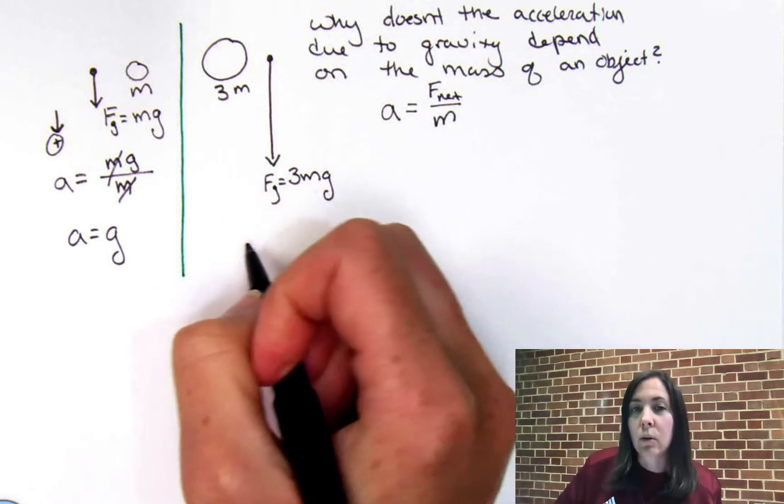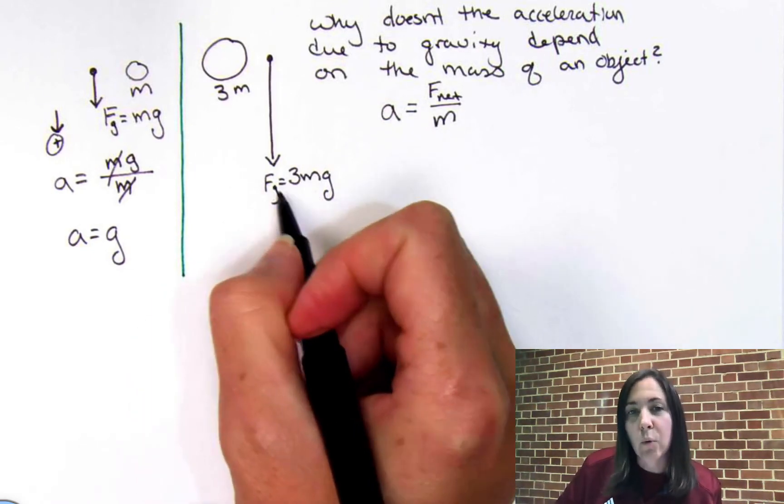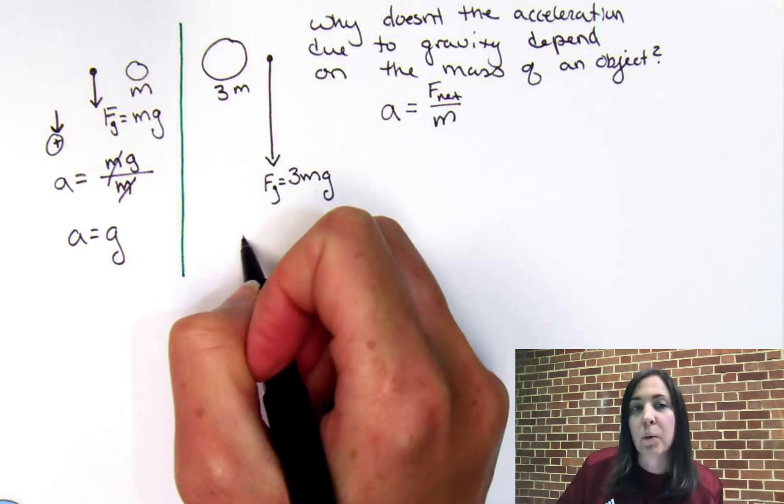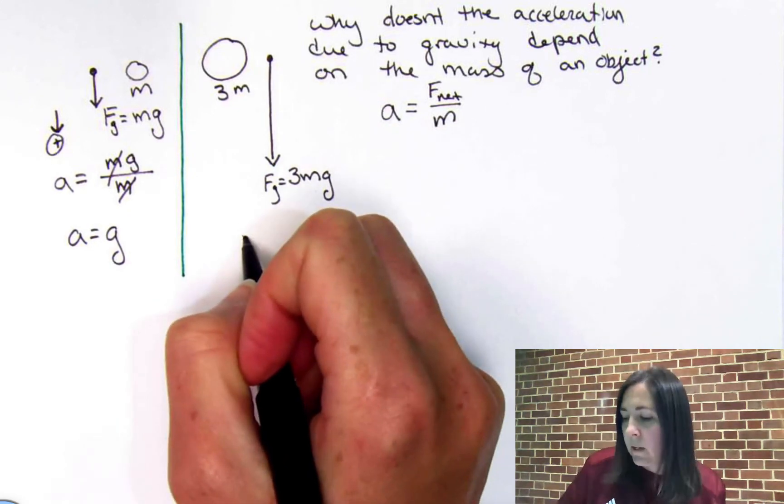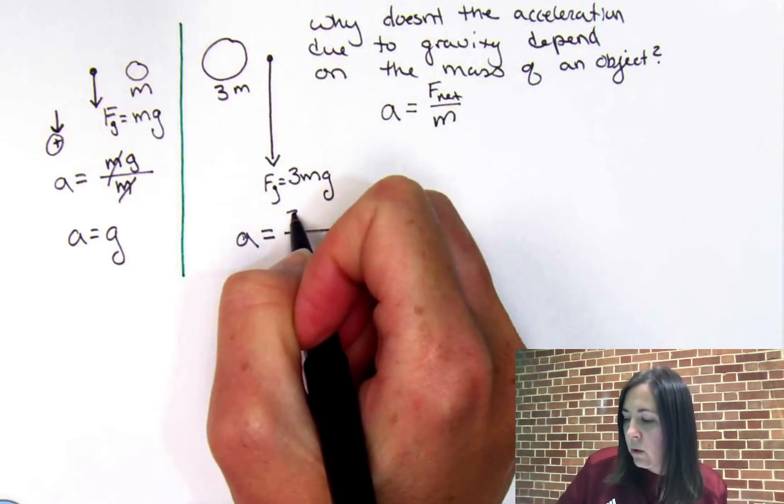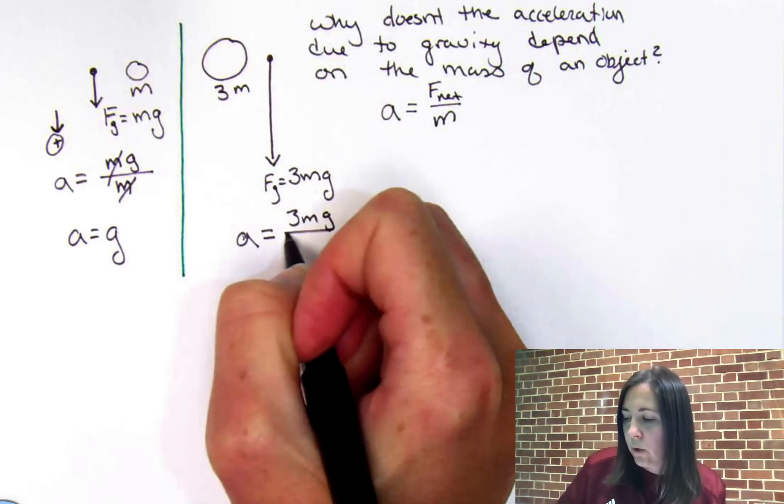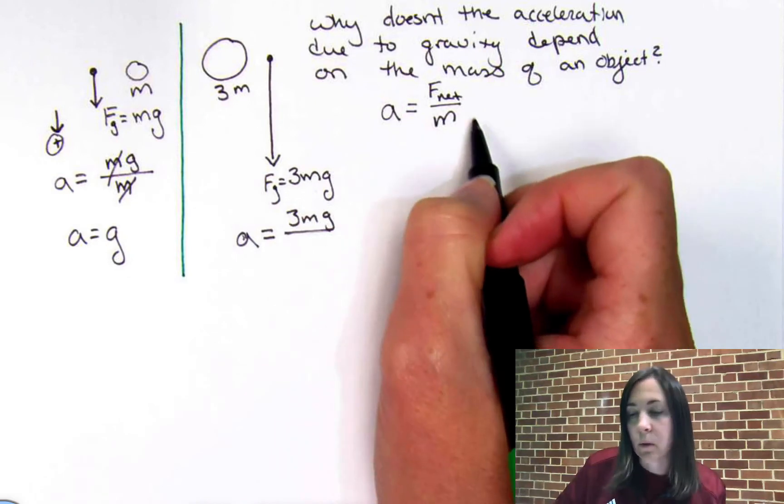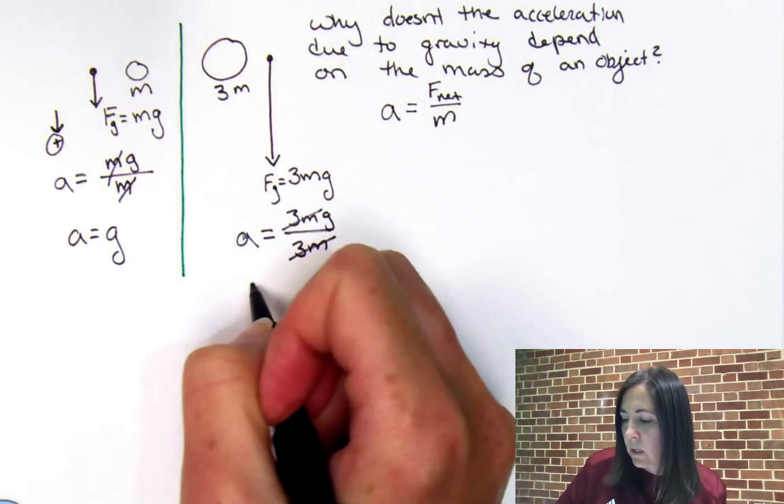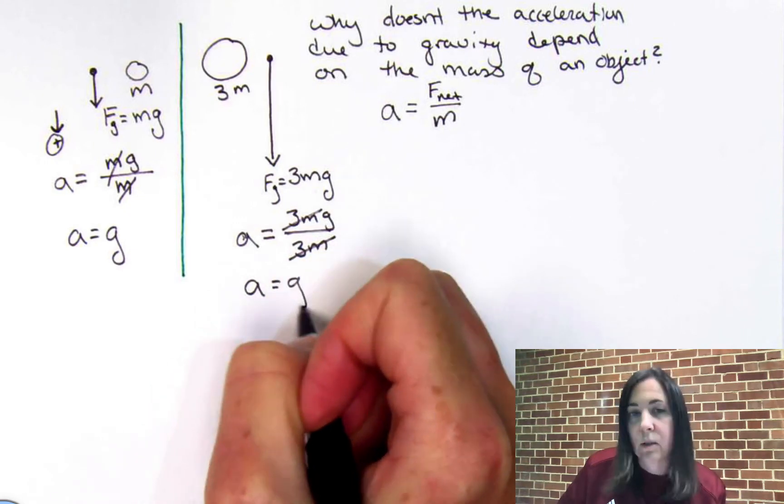Now, for our larger rock, the net force is bigger, but the mass of the rock is proportionately bigger as well. And so, when we do the acceleration is the net force, 3mg, over the total mass of the rock, 3m, you see that that mass cancels again. And so, the acceleration is just g.